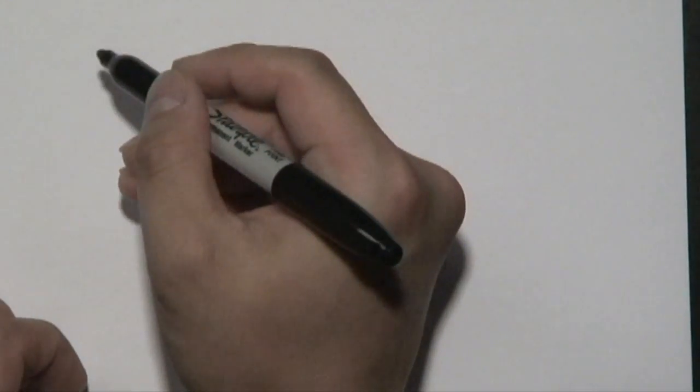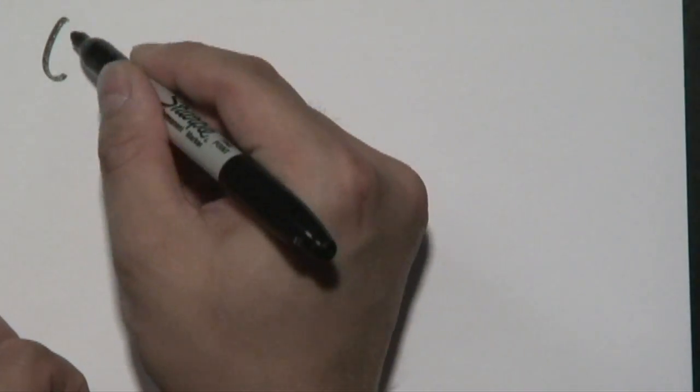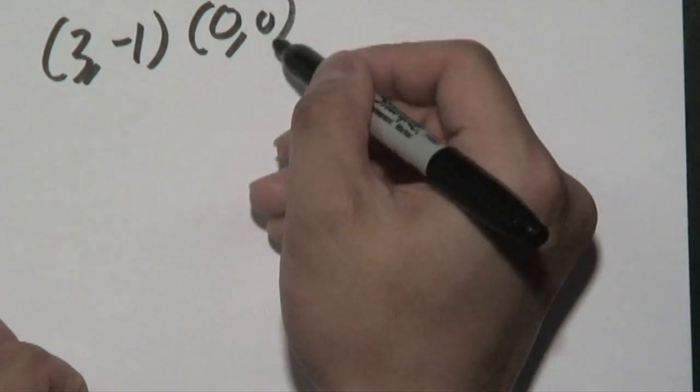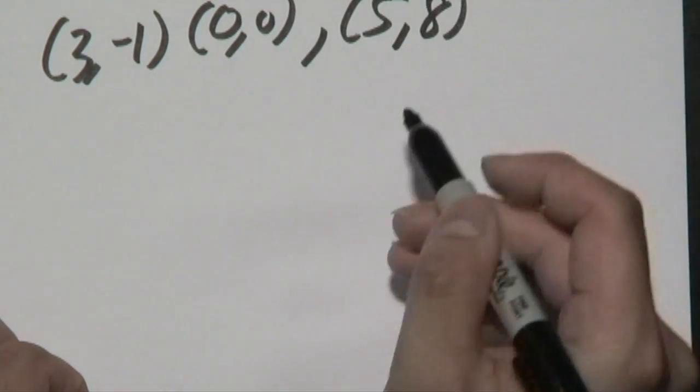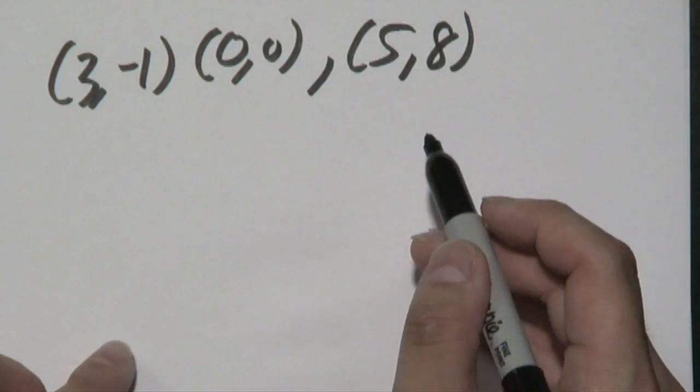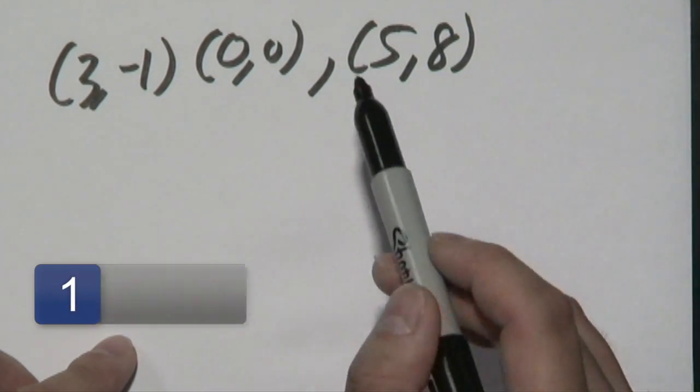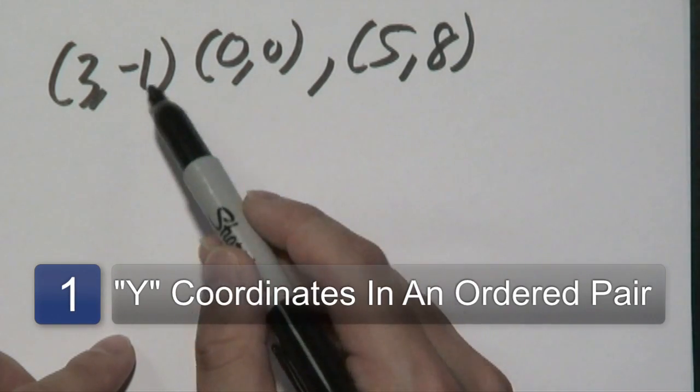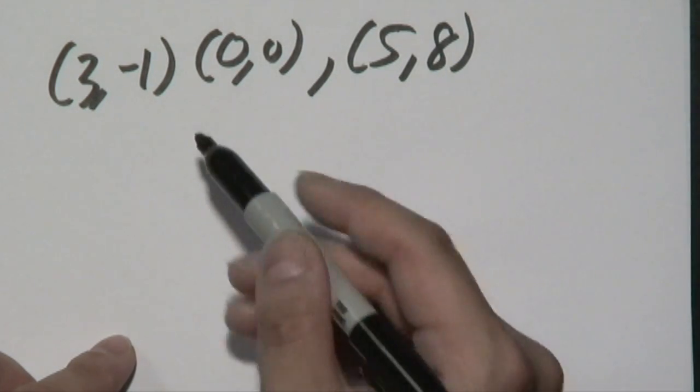Now the first example we're going to be using when it comes to finding range in math is using that of ordered pairs. So for example, if you had three points: (3, -1), (0, 0), and (5, 8). Again for range we're talking about the Y coordinates. Now just as a friendly reminder, the X coordinates are known as domain. But in this case, all you have to do is pinpoint the Y coordinates.